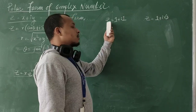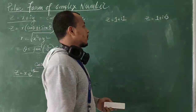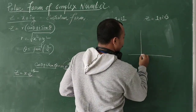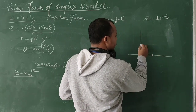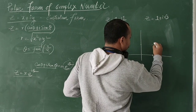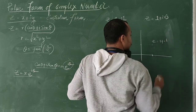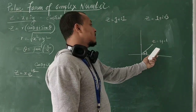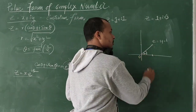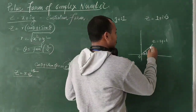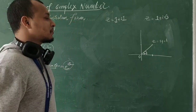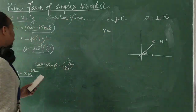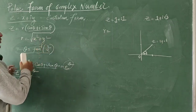We are going to solve for the complex number Z = 1 + i. Let's draw a diagram. The real part is 1 and the imaginary part is 1. We need to find the distance from the origin to this Z. R = √(X² + Y²) = √(1² + 1²) = √2.